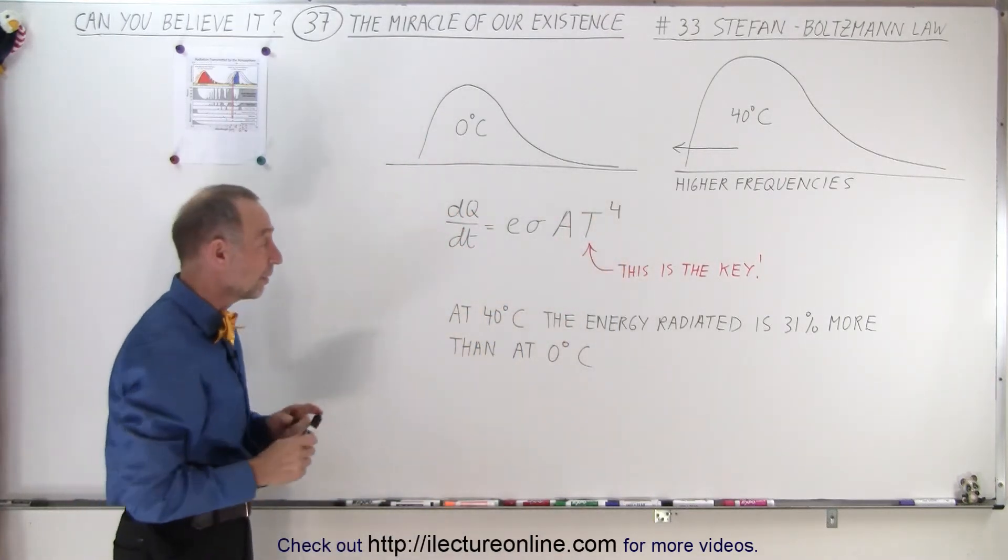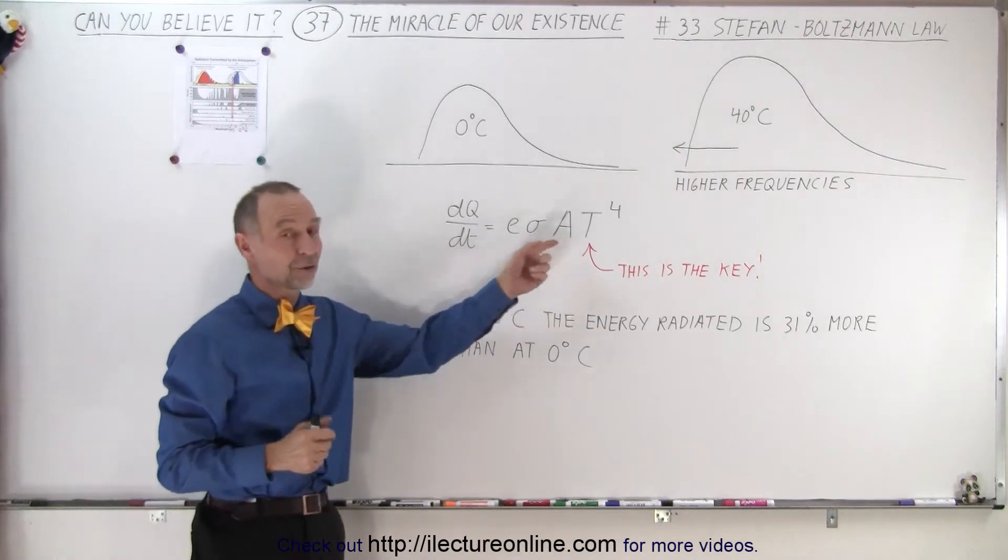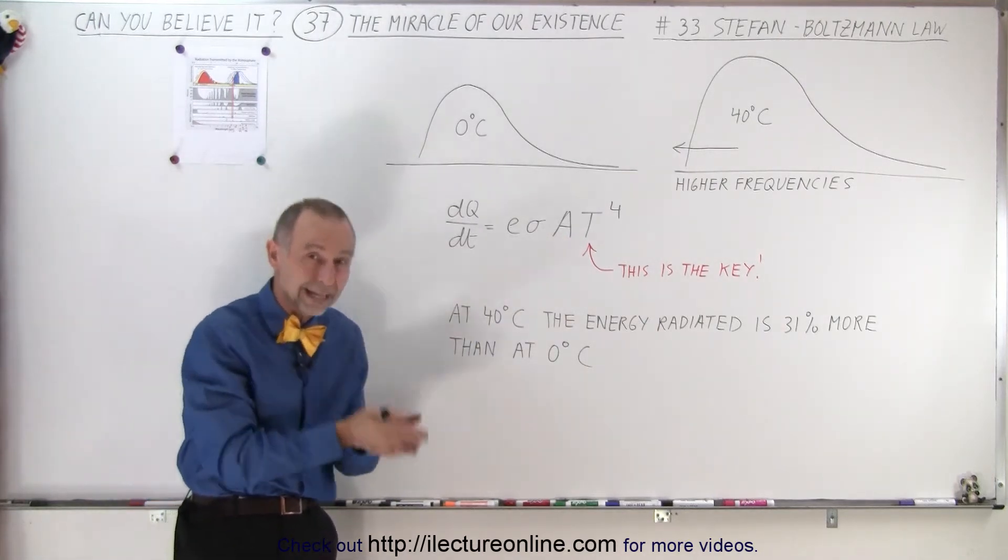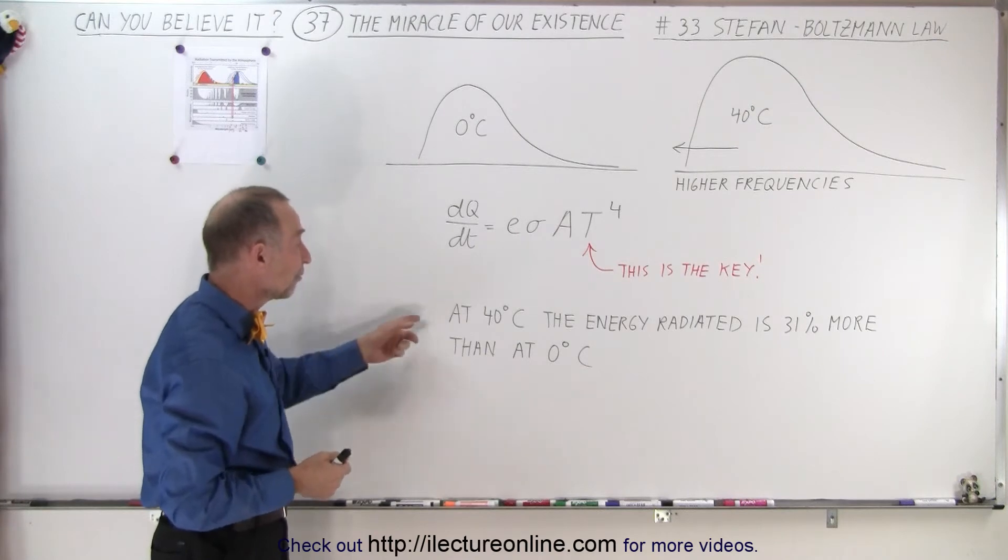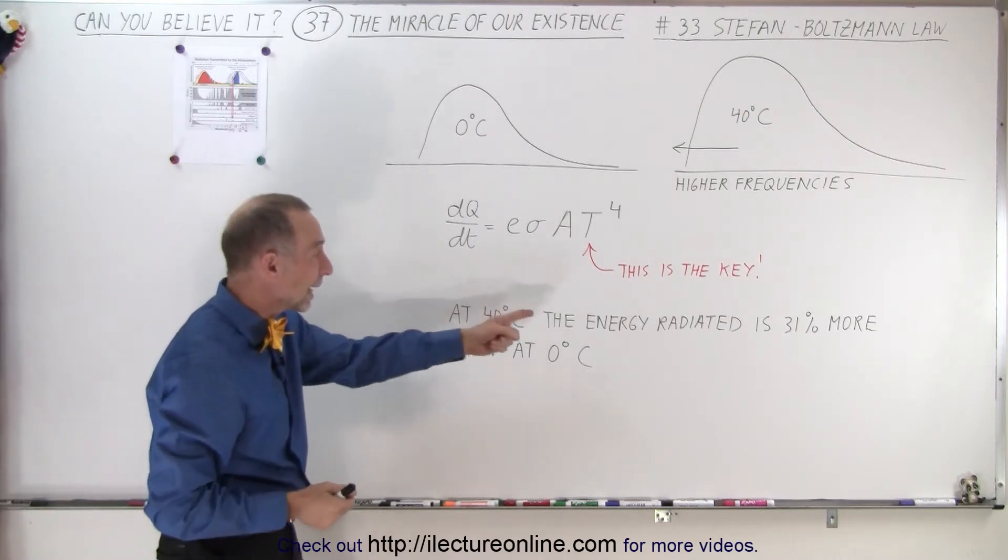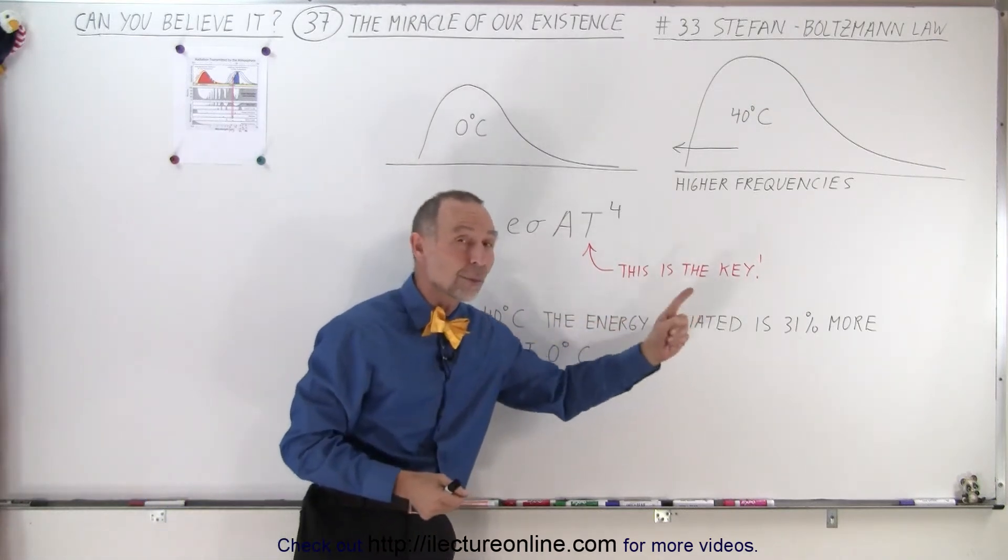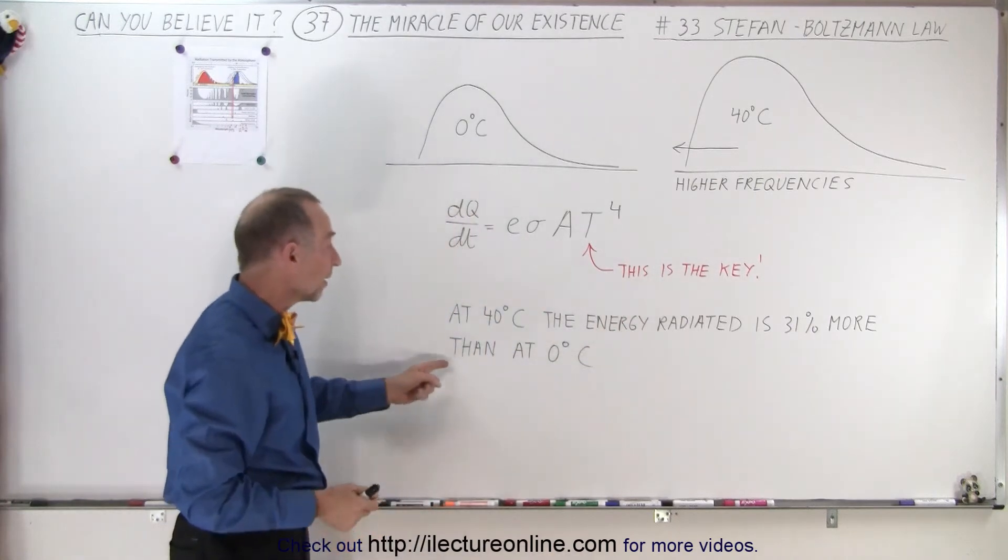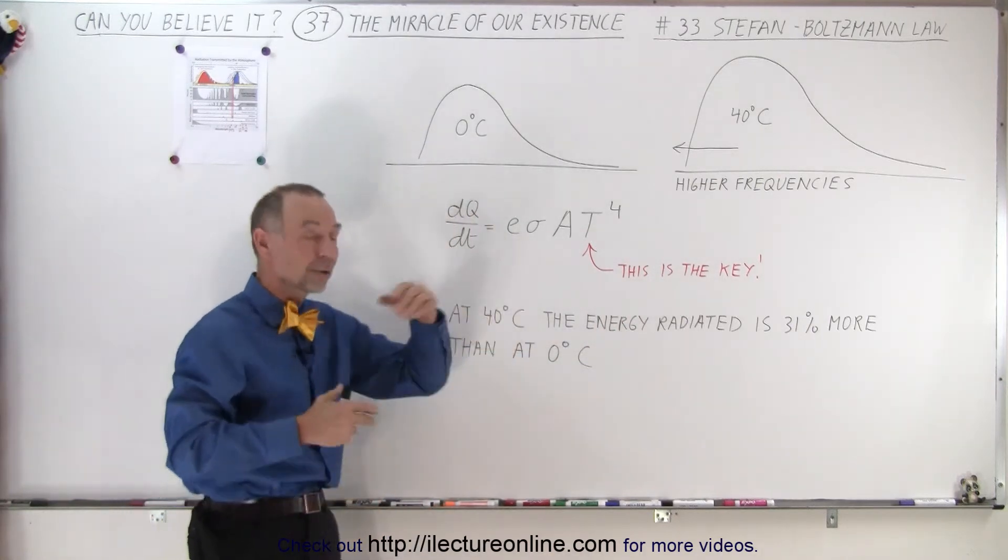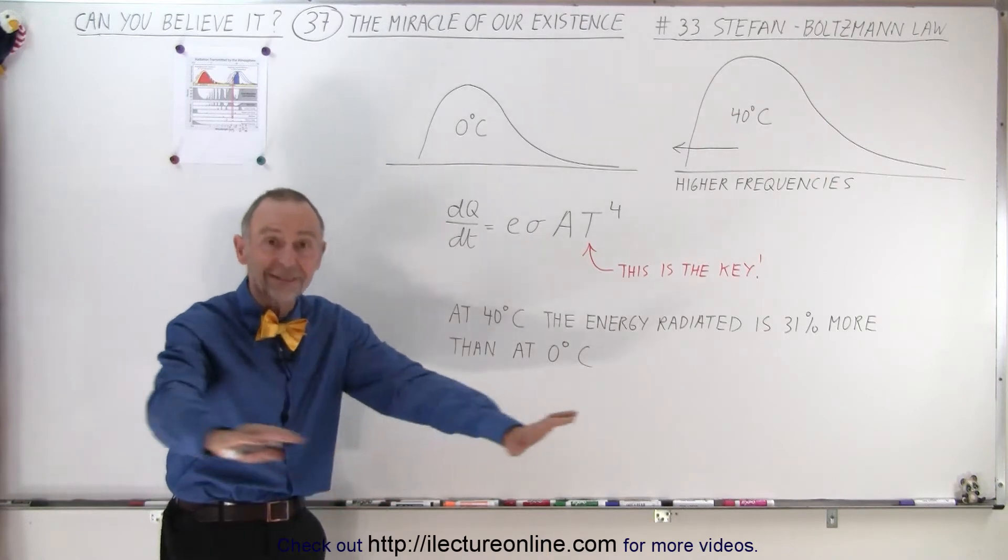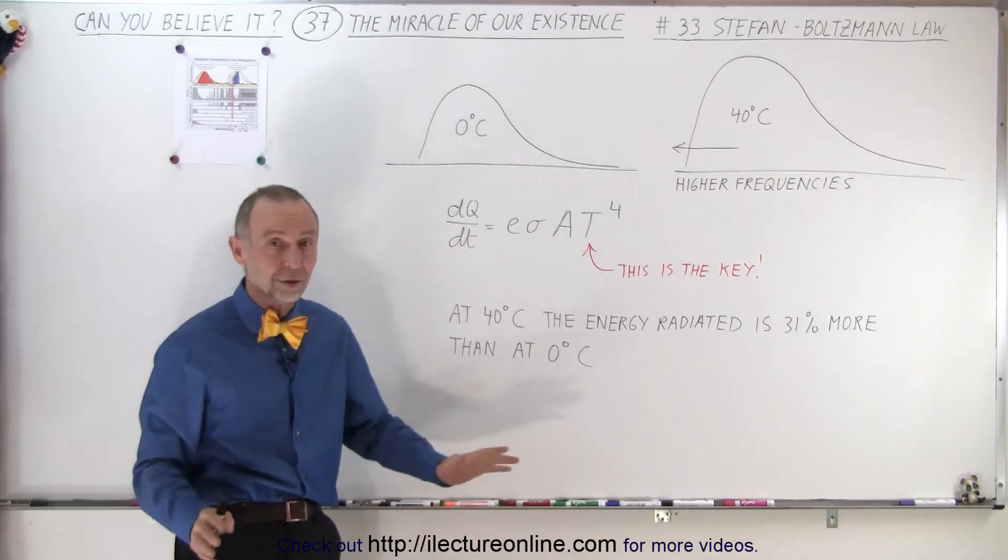So it turns out we cannot use temperature in Celsius degrees in the equation. We have to convert it to Kelvin. But at 40 degrees Celsius, the energy radiated is 31% more than from the same surface at 0 degrees Celsius. And that's assuming it's the same surface, the same rock, sand, and all that.